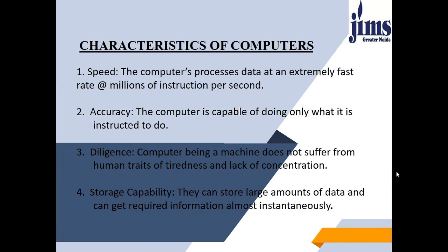Now, the different characteristics of the computer. The first characteristic is speed — the computer processes data at an extremely fast rate, that is millions of instructions per second. Then comes accuracy — the computer is capable of doing only what it is instructed to do, so the results are executed accurately. Next comes diligence — a computer being a machine does not suffer from tiredness or lack of concentration. Next is storage capacity — computers can store large amounts of data and retrieve required information almost instantaneously.